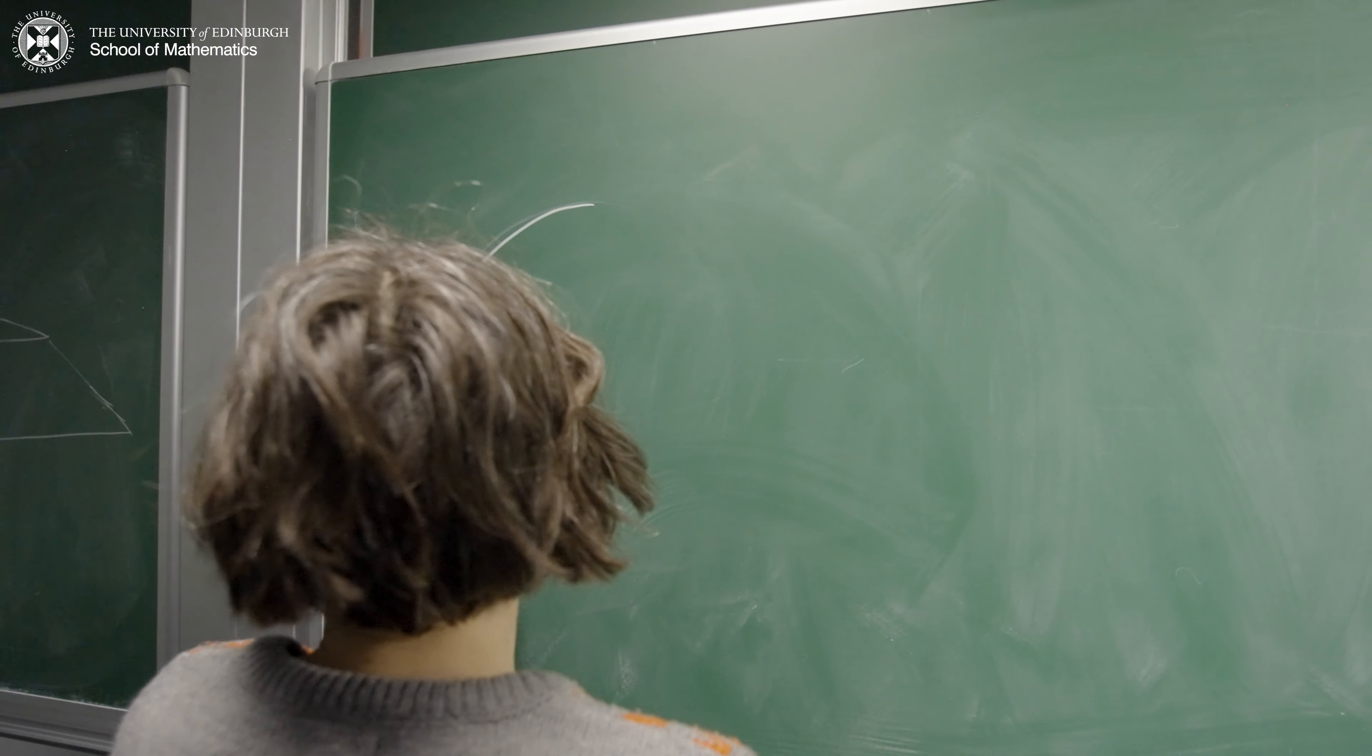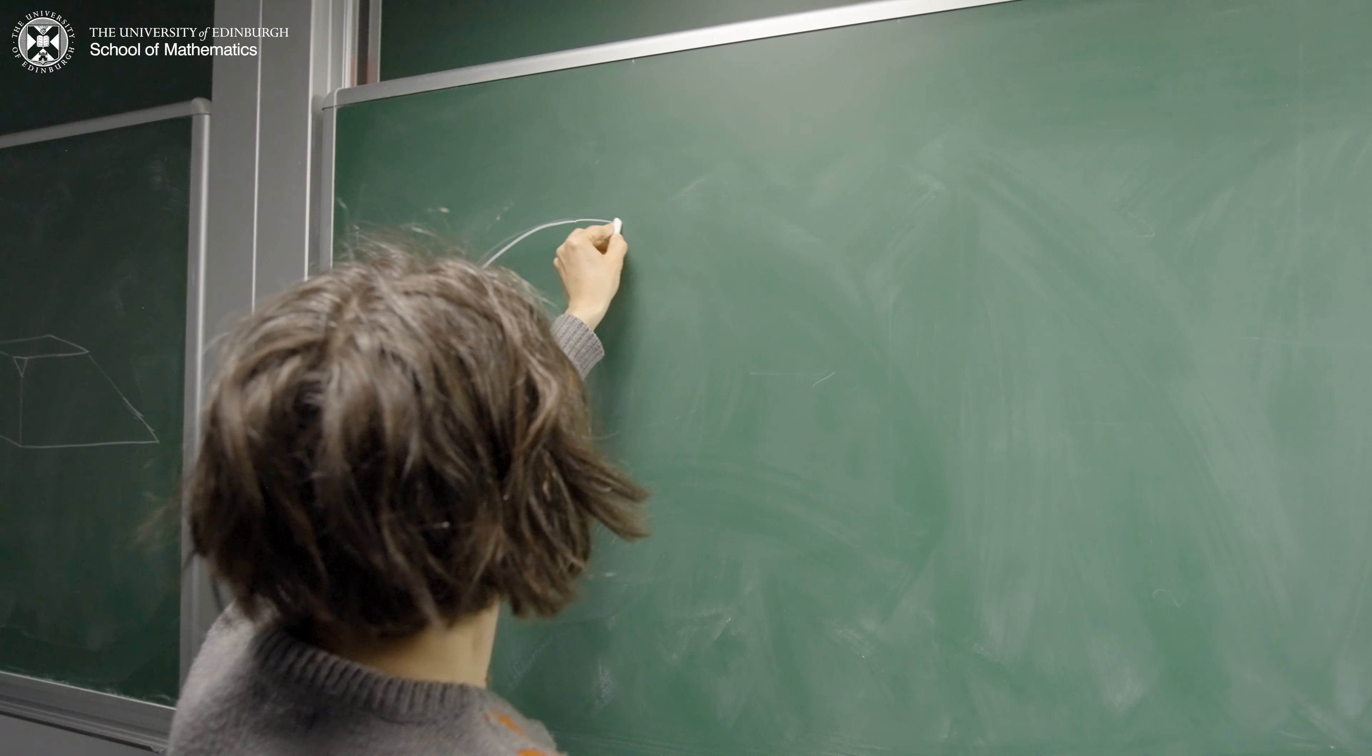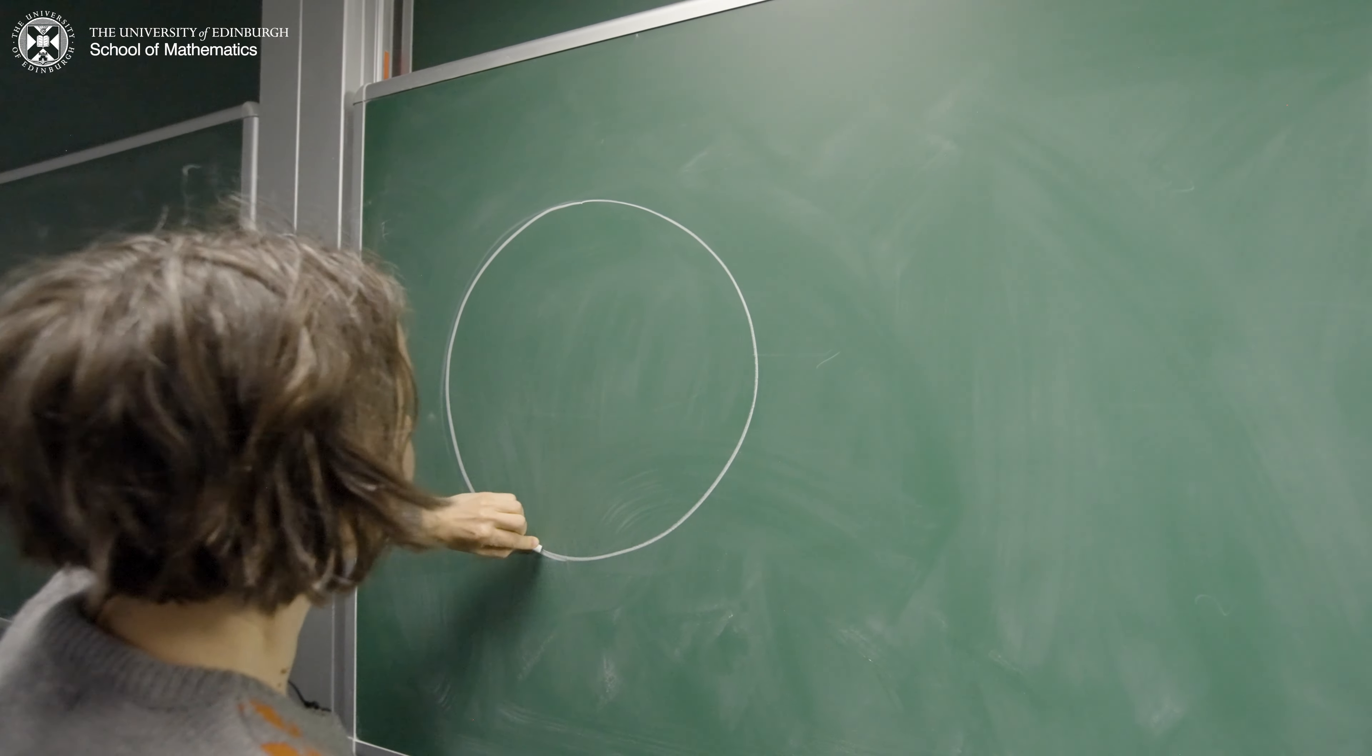And inside symplectic geometry, I study spaces that have a lot of symmetries. So for example, the surface of a sphere, like our globe, has rotational symmetry.